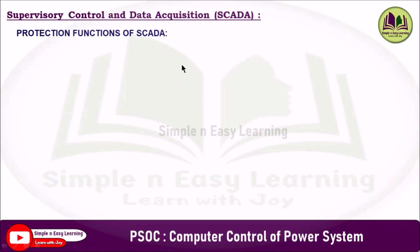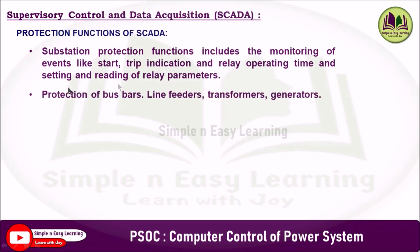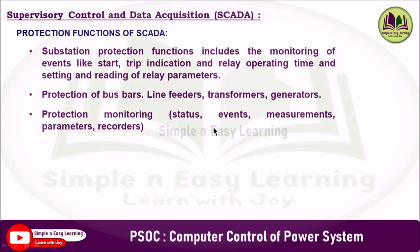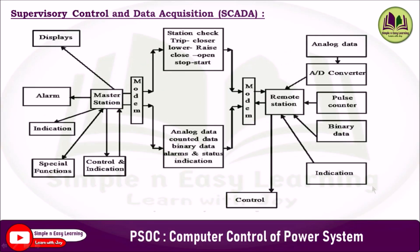The protection functions of SCADA include substation protection functions such as monitoring of events like start, trip indication and relay operating time, setting and reading of relay parameters, protection of bus bars, line feeders, transformers and generators, protection monitoring including status monitoring, events, measurements, parameters and recorders, and adaptive protection by switchover of active parameter sets. This completes the block diagram of a SCADA unit including the master station, communication link, and remote station.